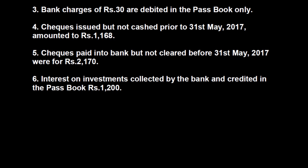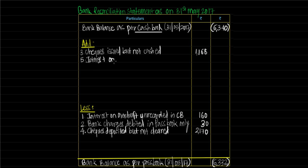Last — interest on investments collected by the bank and credited in the passbook, Rs 1,200. It means we have income of Rs 1,200 which has been received by our bank but we are unaware of it as on 31st May. That is why there is a difference in balance. Since we have not recorded this Rs 1,200 in the cashbook, to land upon passbook balance, we will have to add Rs 1,200 because passbook has recorded this receipt. We write: interest on investments directly credited into bank — Rs 1,200.